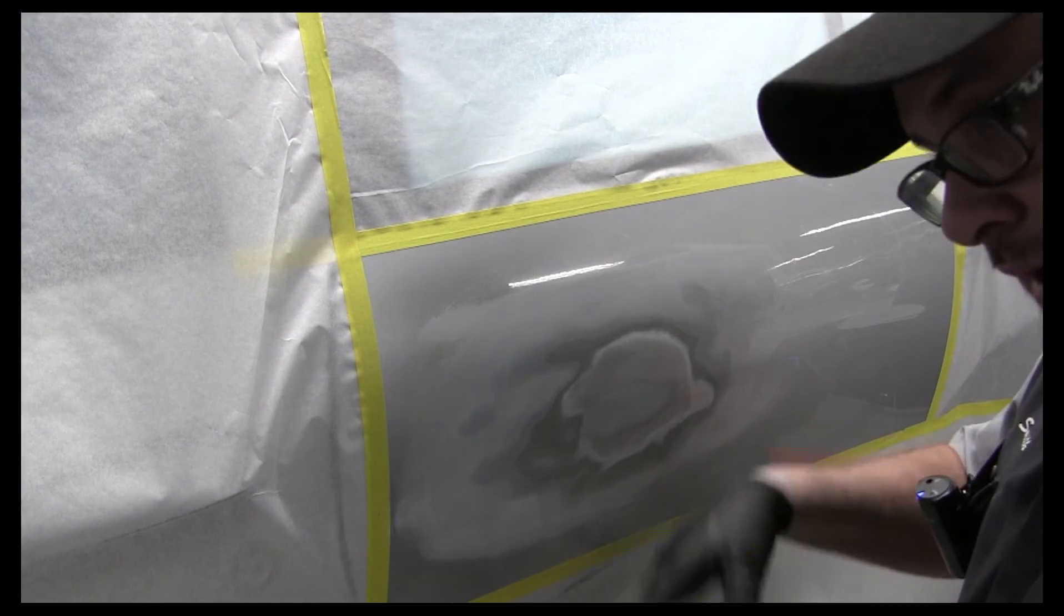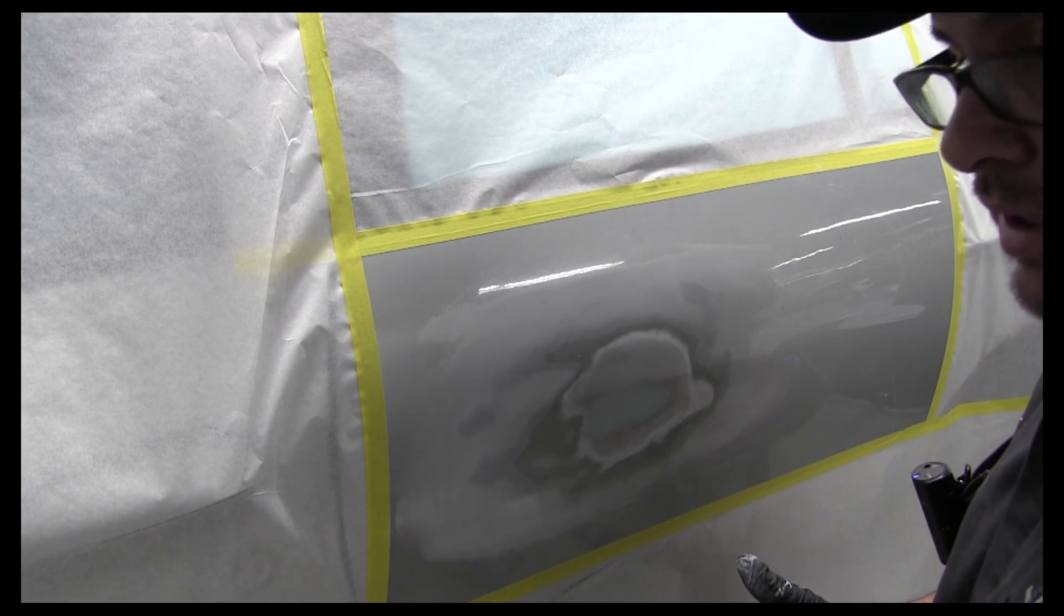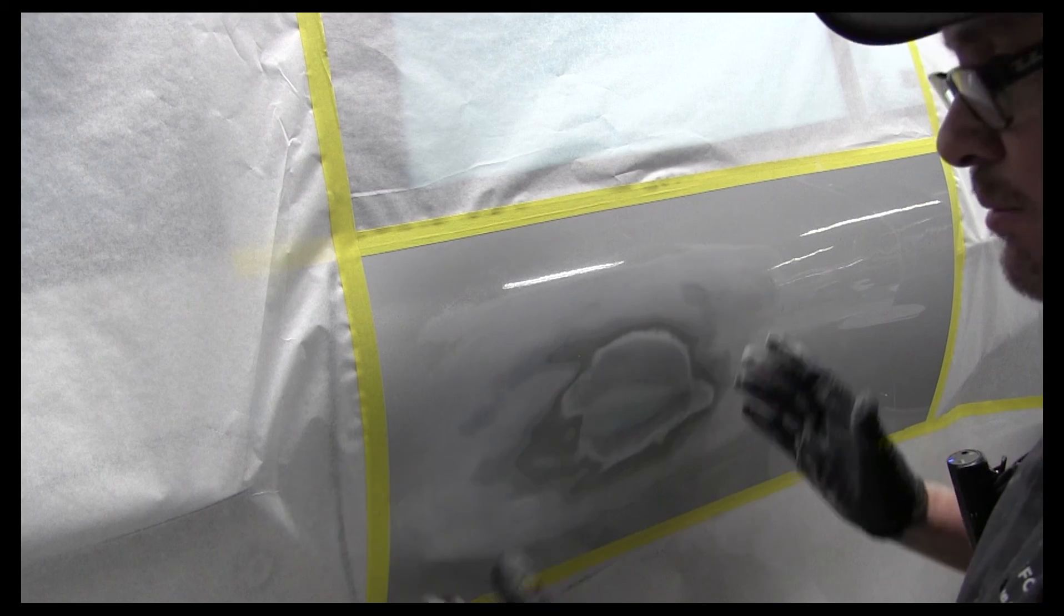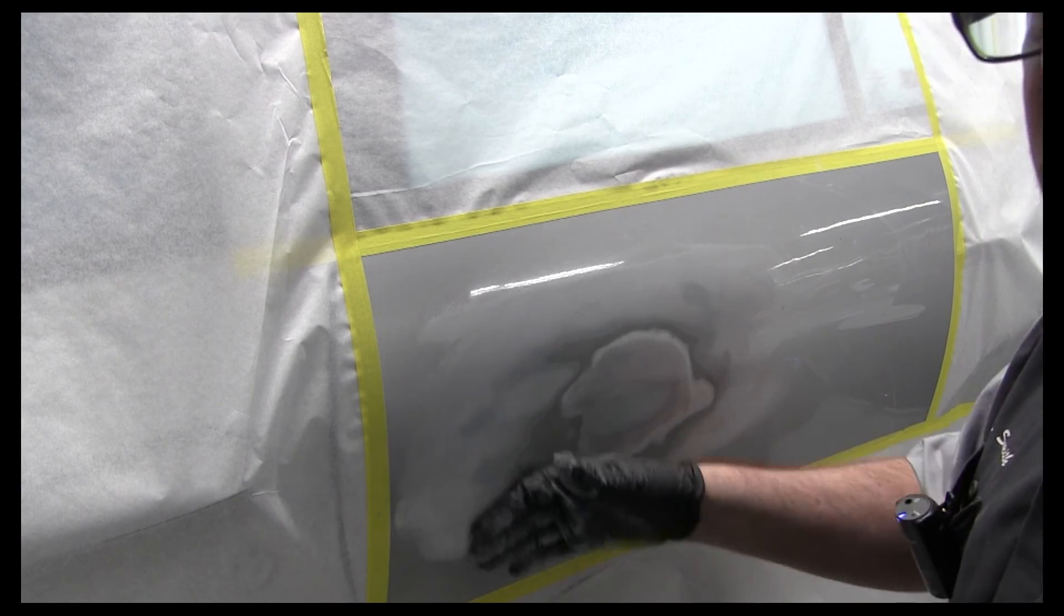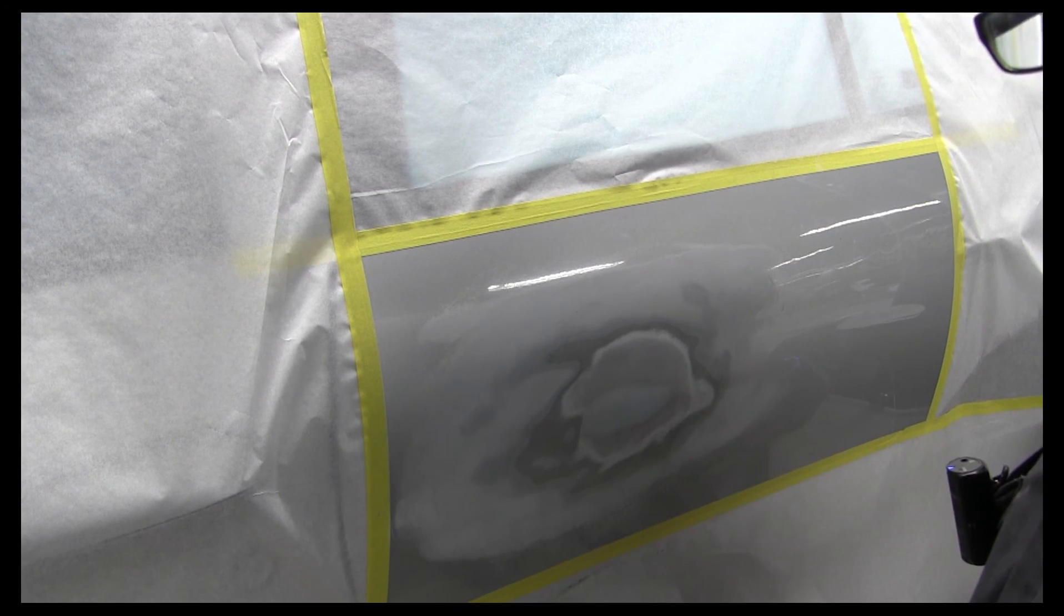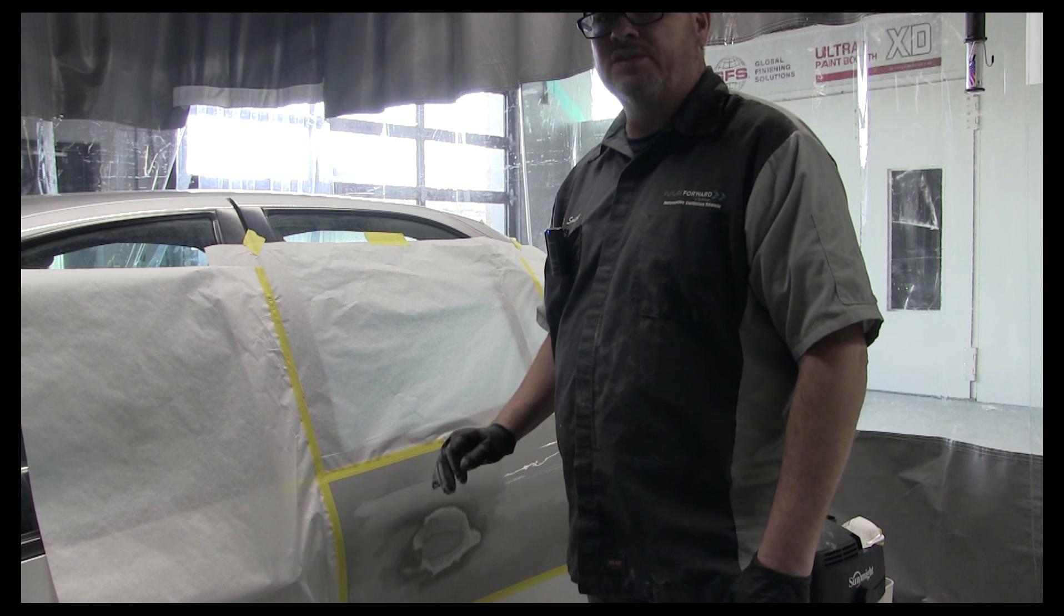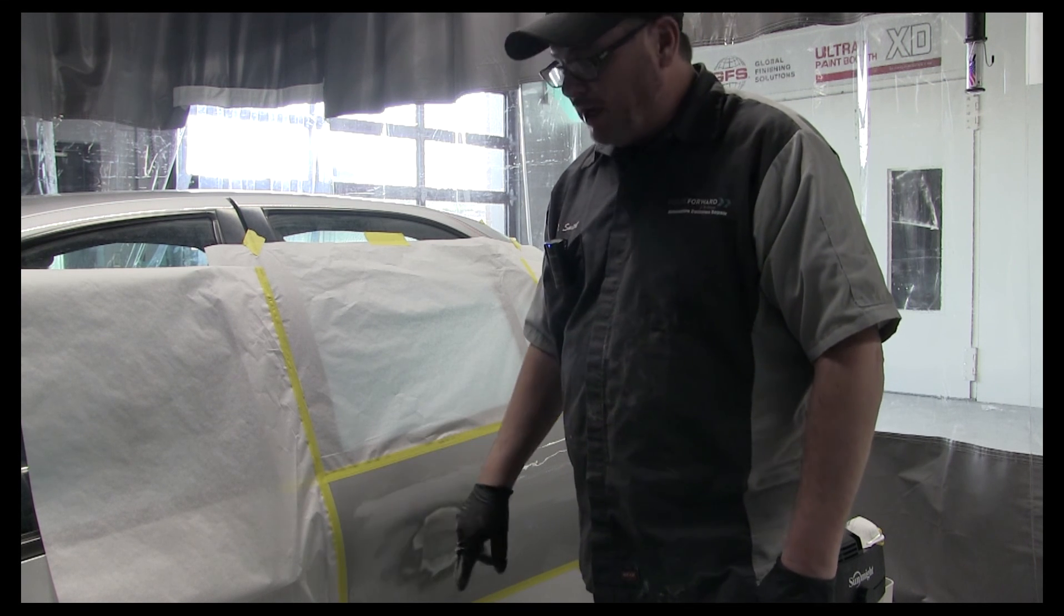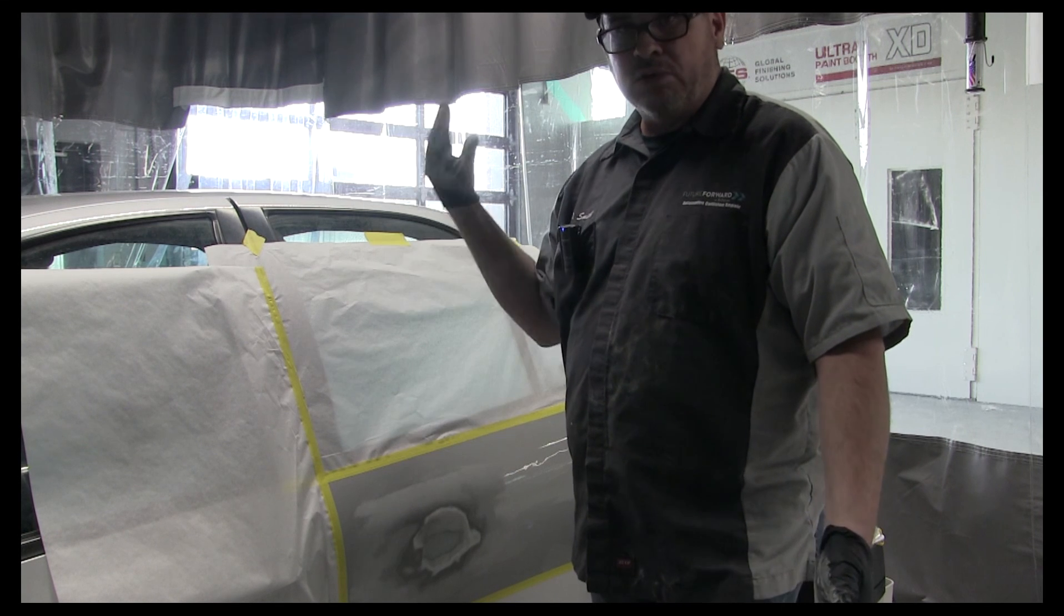So the next step is clean it. Wax and grease remover, mask it off, get it in the booth, prime this area the recommended amount of coats, and then we can block sand that, and then it'll be ready for paint. So that is the steps it takes to remove the paint, apply body filler, sand your body filler, feather edge, and get ready for prime and block. And once you're done with that, it's ready to paint.